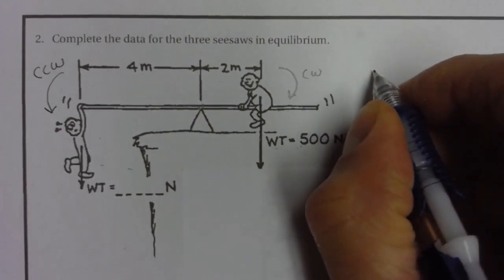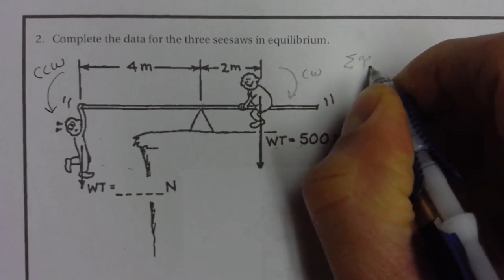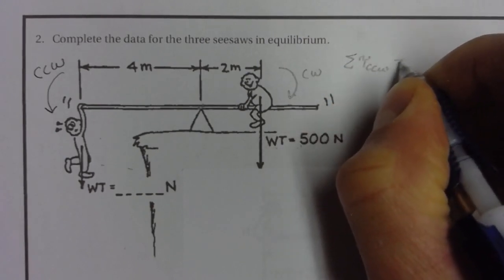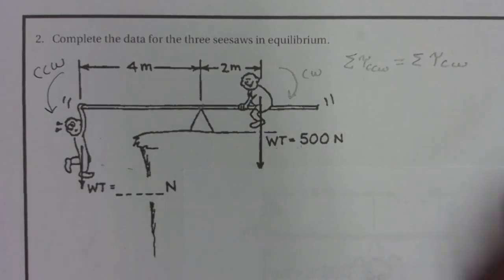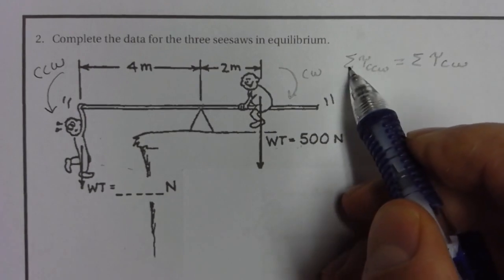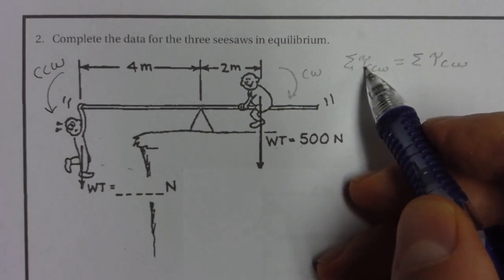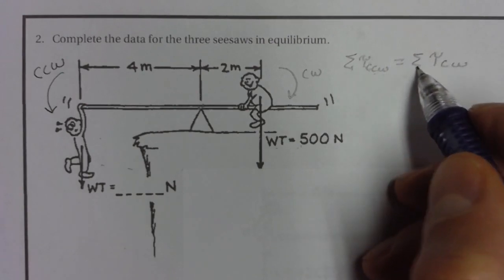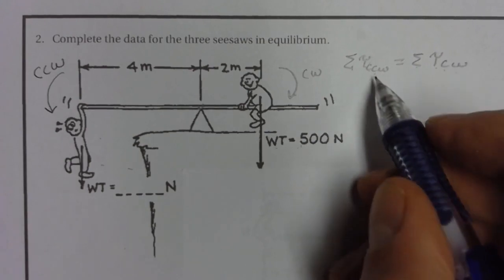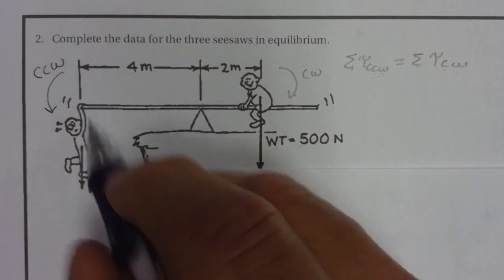We've got some symbols: the sigma for sum, the curly little t for torque, and CCW for counterclockwise. The torque that is counterclockwise—there's only one, it's from that guy—is the force that is perpendicular times the distance to the axis.